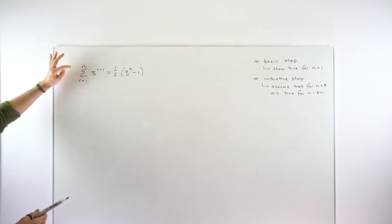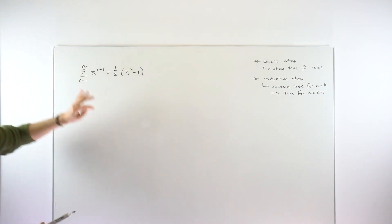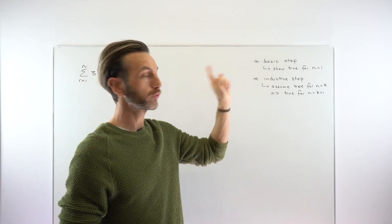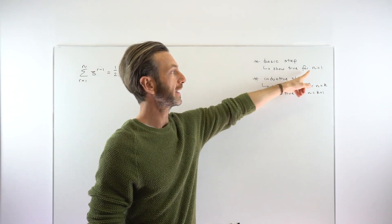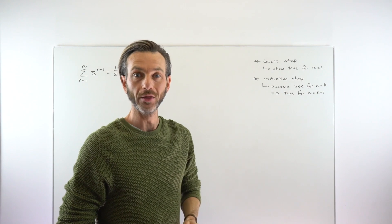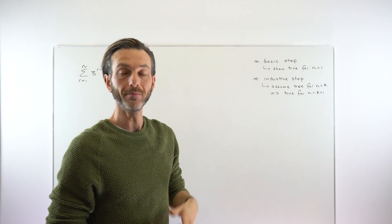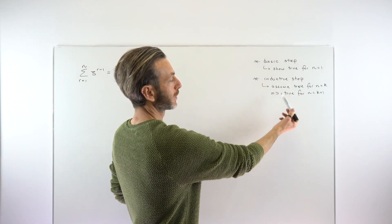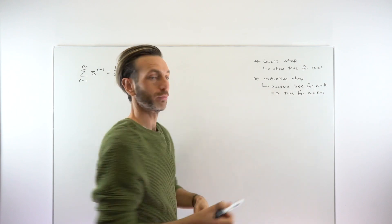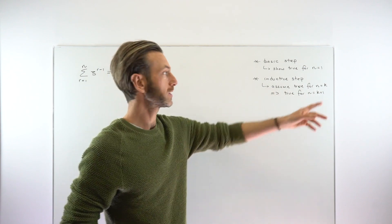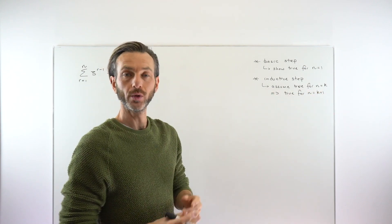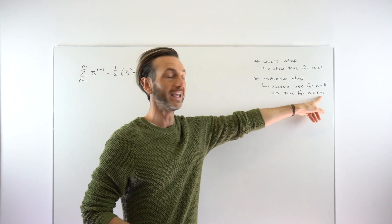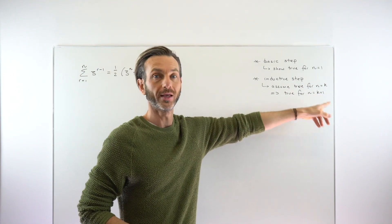The first case in this example is where n is 1, so our basic step here would be showing that the result is true when n equals 1. The more challenging part is the inductive step, where we're assuming the result is true for some general case, like the kth case, and showing that implies the result is true for the next case, the k plus 1th case.